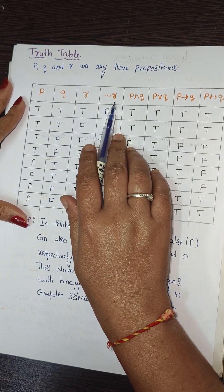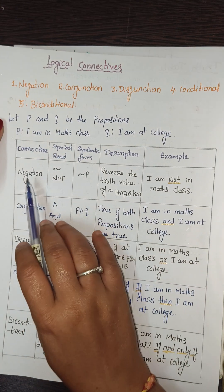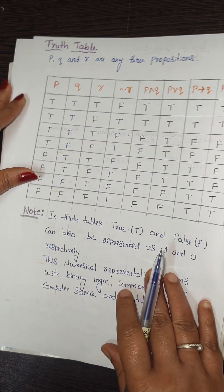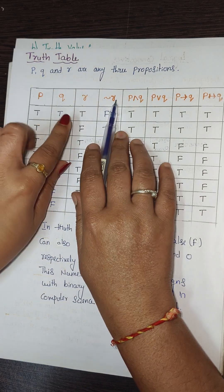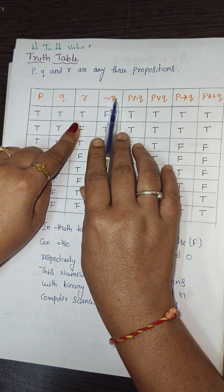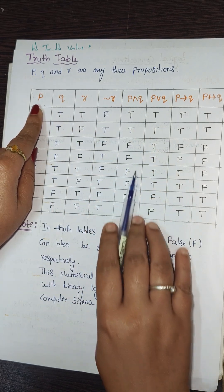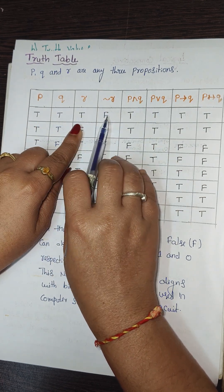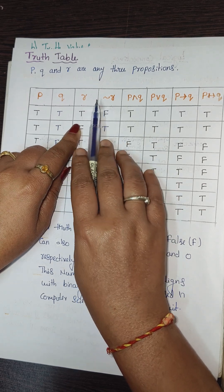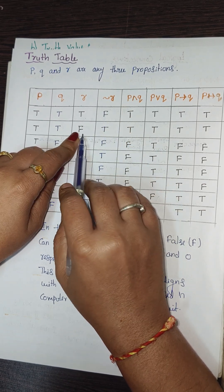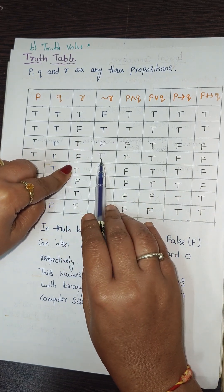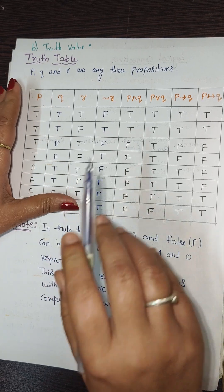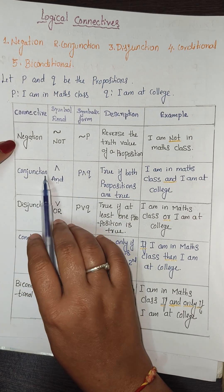For negation, we reverse the truth value of a proposition. Taking ¬r as the example: T becomes F, F becomes T, T becomes F, F becomes T, T becomes F, F becomes T, T becomes F, F becomes T.